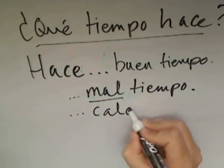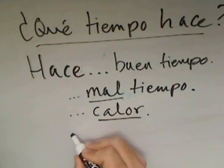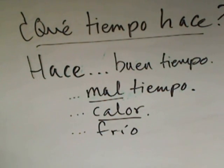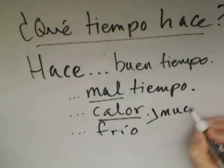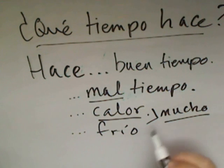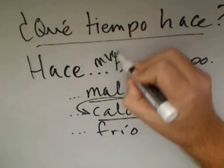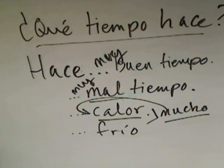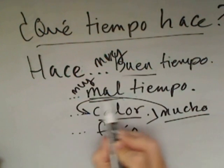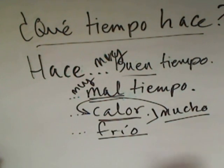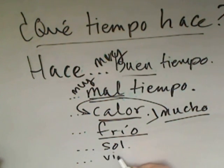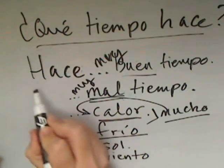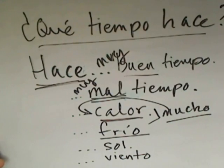Hace calor — it's hot. Hace frío — it's cold. With these two we can also say hace mucho calor and hace mucho frío. With buen/mal tiempo I can say hace muy buen tiempo or hace muy mal tiempo — the weather is fantastic, or the weather's horrible. A couple more options with hacer: hace sol — it's sunny, and hace viento — it's windy. So that's our first possibility for a formulaic response: responding with hace.